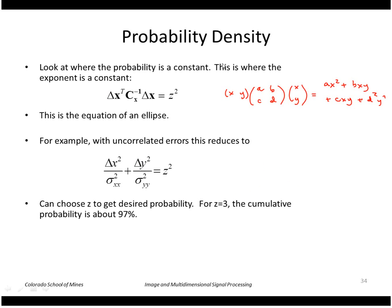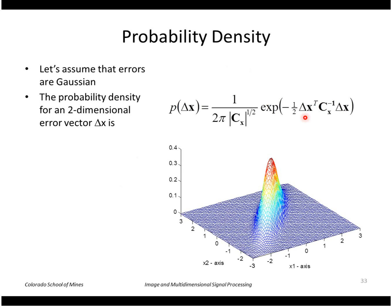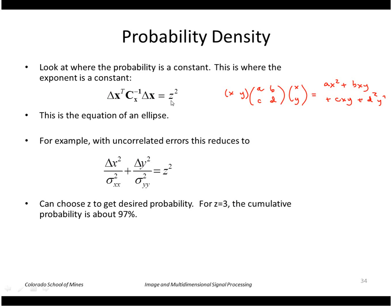If we look at the exponent of this function here, this value, and look at where that's a constant, that's the equation of an ellipse. For example, we take delta x as a two-dimensional vector, say xy, here's our covariance matrix ABCD.